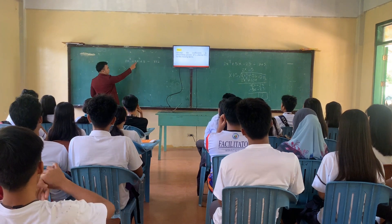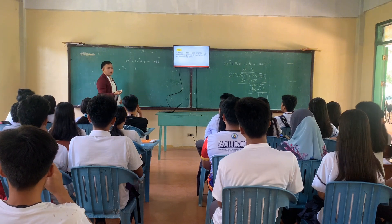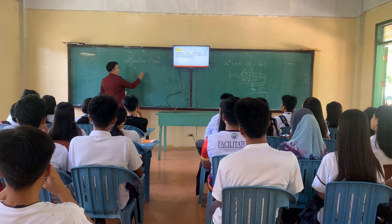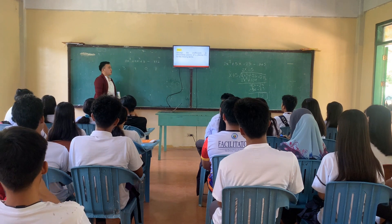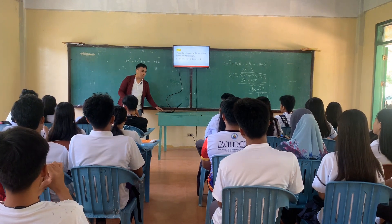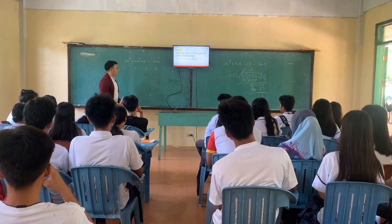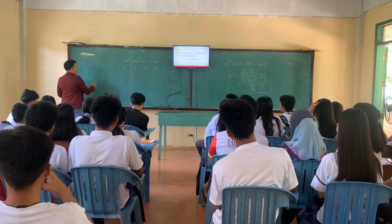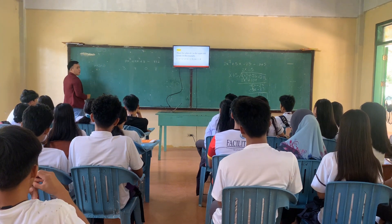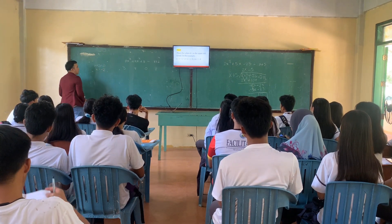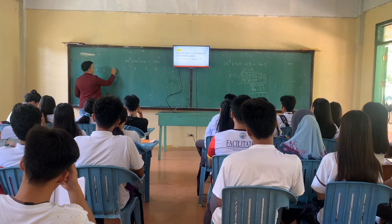Do we have any missing terms? Yes, so we will replace them with 0. Do we have a constant? Yes, our constant is 8. Step 2: place the value of r in the upper left corner. We equate the divisor to 0: x plus 2 equals 0, so x equals negative 2. Therefore, the divisor value is negative 2, placed in the upper left part.